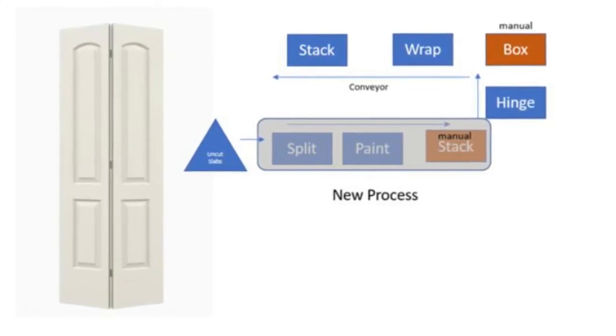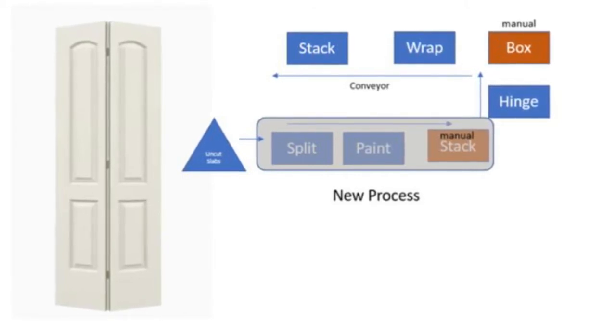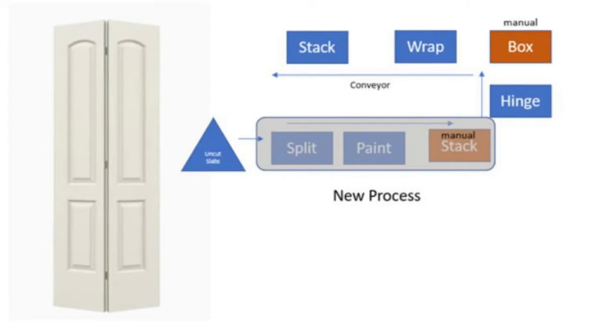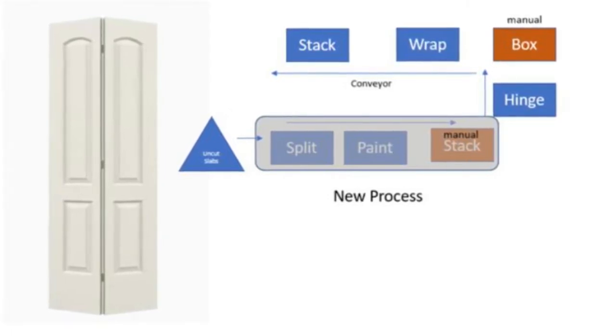In order to streamline production, Jeldwen introduced new machinery into the hinging cell. These new machines allowed for the splitting, painting, sanding, and curing of bifold doors within the same cell as the other processes.